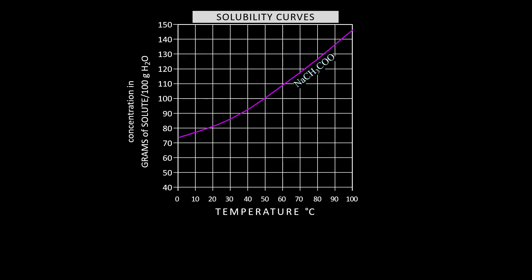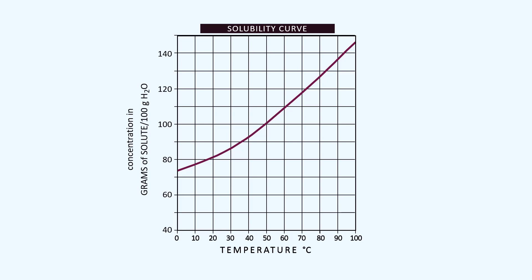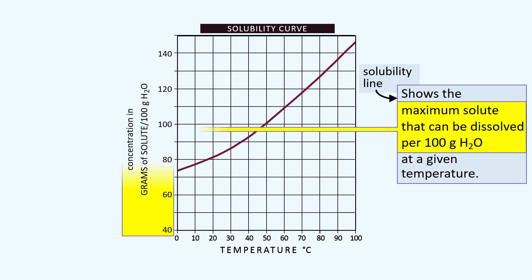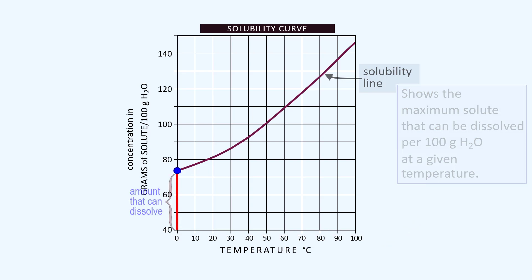Let's look at one of these curves, that of sodium acetate, and see what information this curve gives us. We call this a solubility curve or the solubility line, and that shows the maximum solute that can be dissolved per 100 grams of H2O, which is what we put on the y-axis. But that maximum is per some specific temperature. At any given temperature you have a specific amount that you can dissolve, and that amount increases as the temperature increases.